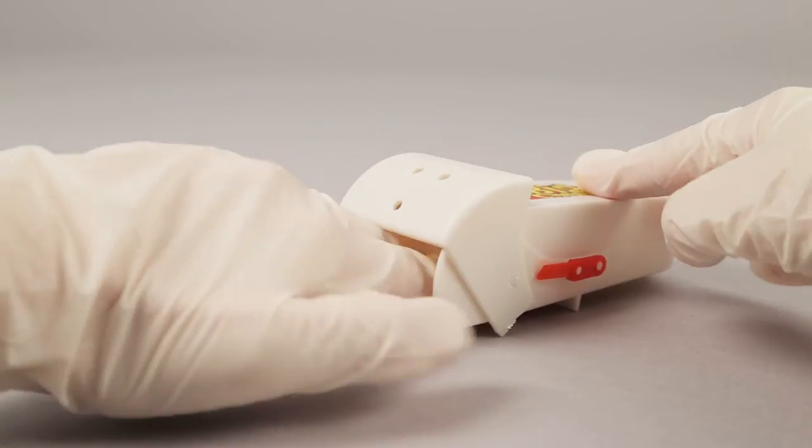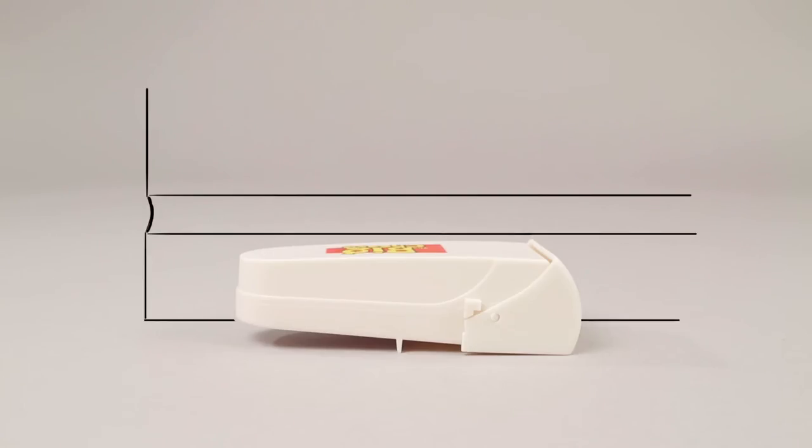Slide the bait plate back into place. Place the trap flat onto the floor parallel to the wall.